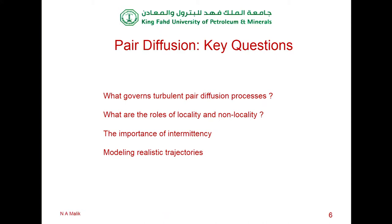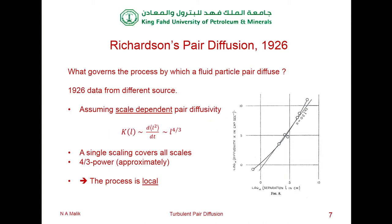Let's go back to first principles — back to Richardson 1926, a very classical paper; it'll be a famous centenary in 2026. Richardson collected data from various sources, mostly geophysical: volcano ash spreading and balloons in the atmosphere. He plotted this data and presented pair diffusion theory in the form of what's called the pair diffusion diffusivity — not one-particle diffusion, but literally the pair diffusivity, the relative diffusivity associated with pair diffusion. He considered the pair separation L at any particular time.